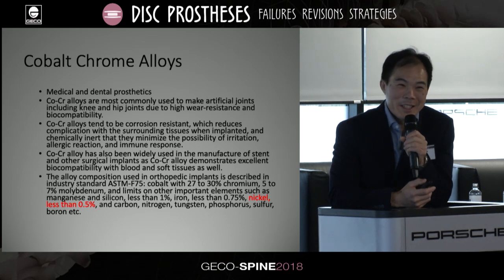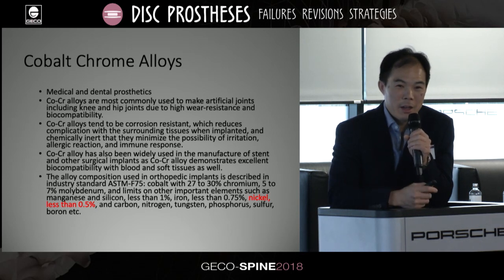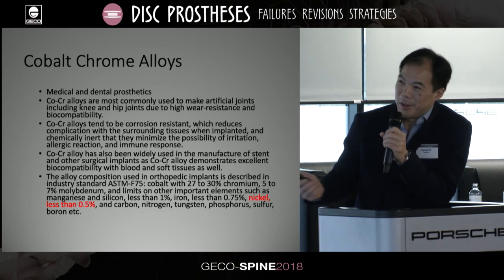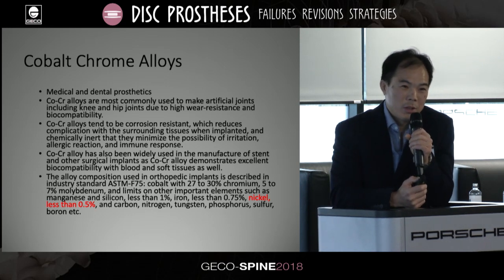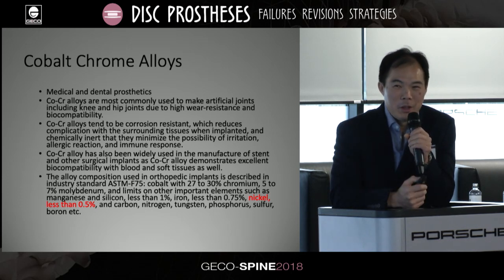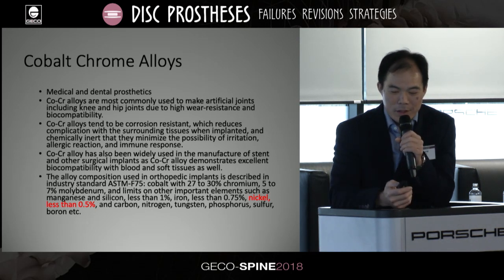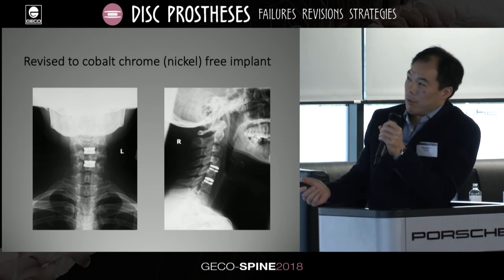I looked extensively for reasons why she could be developing these symptoms. I called the company and asked if cobalt-chrome contains any nickel, because she had told me she was allergic to nickel. I sent her bloods off and she came back highly allergic to nickel. Initially the company denied that cobalt-chrome contained any nickel, but eventually we found it actually contains about 0.5 to 1% nickel. I made a diagnosis of potential nickel allergy and she was revised to a nickel-free implant.